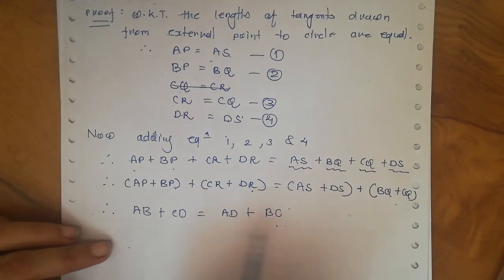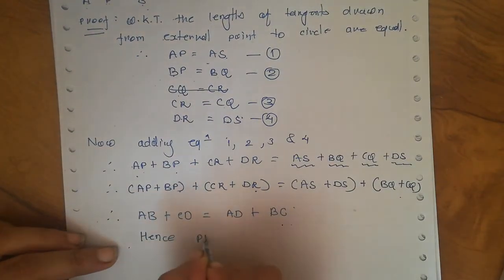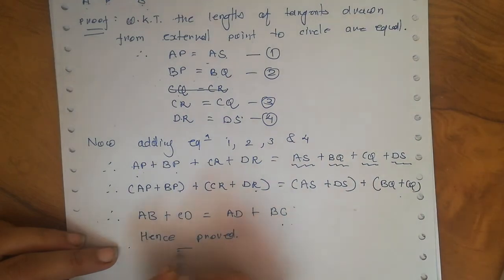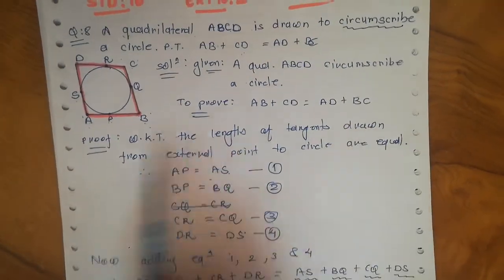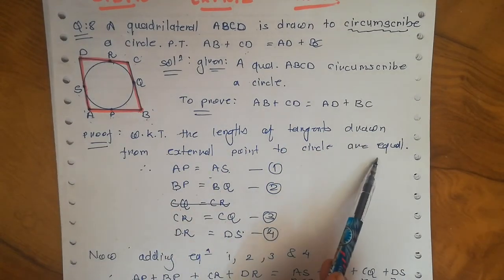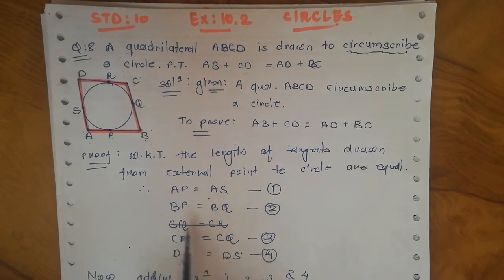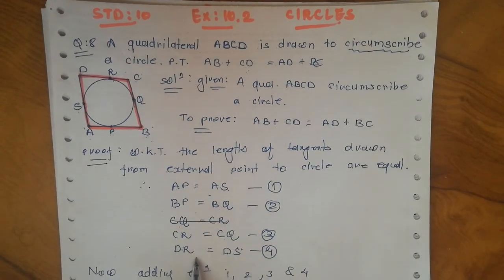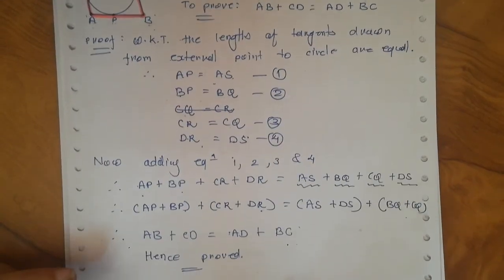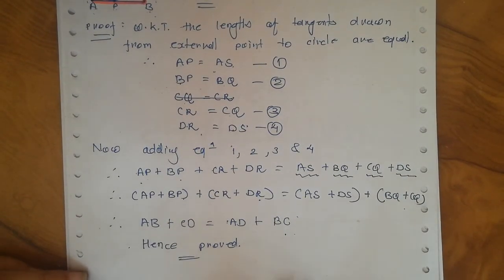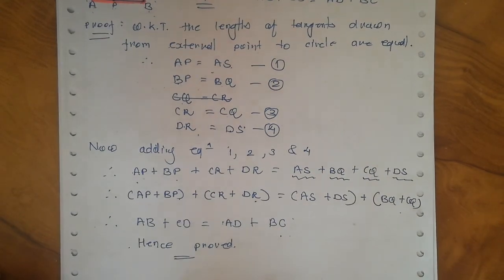Therefore AB plus CD equals AD plus BC — hence proved. This is theorem 10.2: the lengths of tangents drawn from an external point are equal. Pay the most attention to the order in which you write the equations, otherwise your LHS will not equal your RHS. This way you can solve this question very easily. Thank you.